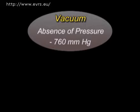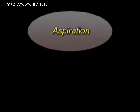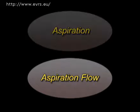We can avoid talking about a vacuum, which is the absence of atmospheric pressure — minus 760 mmHg at Paris or New York. It seems more logical to deal with depression, a pressure inferior to the atmospheric pressure. To avoid any confusion, we will not use the term aspiration, but aspiration flow, which is a measurable physical property.